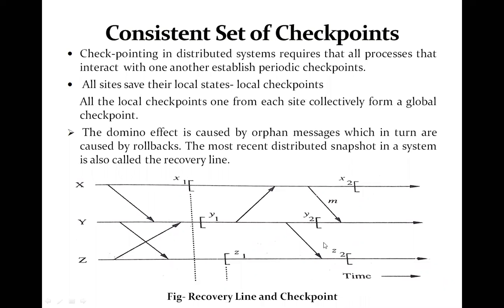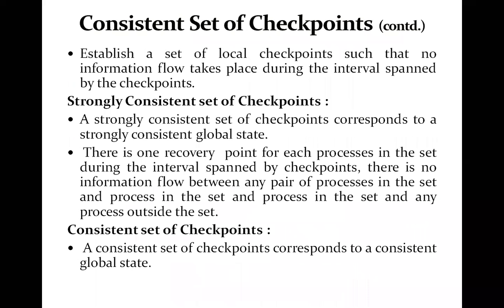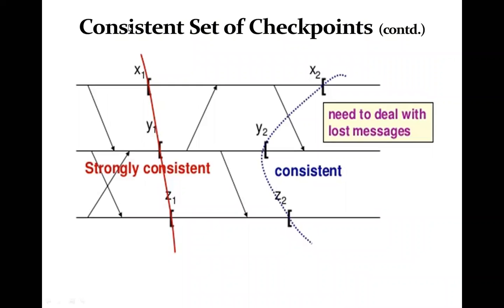Systems that establish strongly consistent checkpoints do not have to deal with lost messages during rollback recovery, but they experience delay during the checkpointing process since processes cannot exchange messages while checkpointing is in progress. The illustrated example shows a strongly consistent checkpoint set and a consistent checkpoint set — the latter because one message is in transit that still needs to be received by process Y from process X.